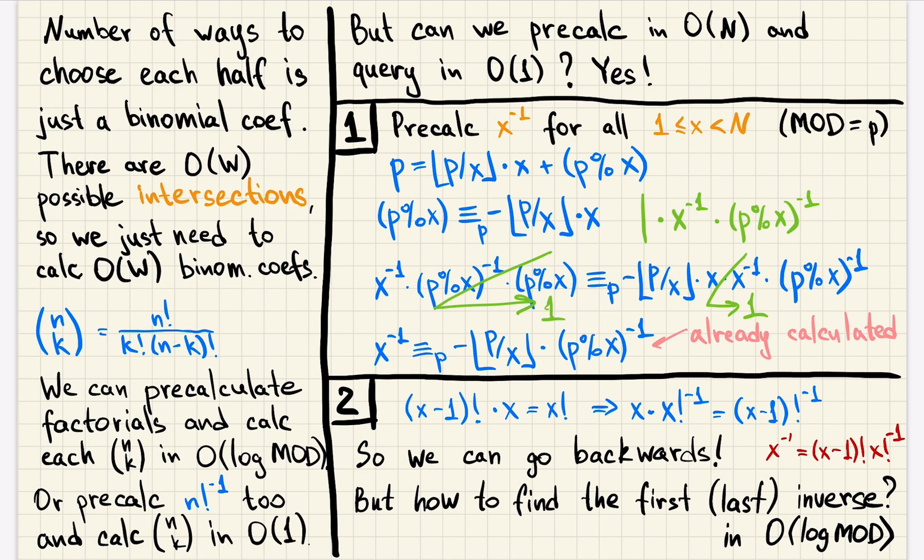Well, there is a formula for binomial coefficients. Choose k from n is n factorial divided by k factorial divided by n minus k factorial. We can pre-calculate factorials. In logarithmic time, we can calculate the binomial coefficient as n factorial multiplied by inverse of k factorial by inverse of n minus k factorial.